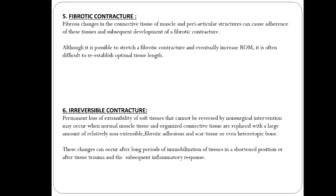Fibrotic contracture occurs when fibrous changes in the connective tissue of muscle and periarticular structures cause adherence of these tissues and subsequent development of fibrotic contracture. It is possible to stretch a fibrotic contracture and eventually increase range of motion, but it is difficult to re-establish optimal tissue length. Irreversible contracture is the permanent loss of extensibility of soft tissue which cannot be reversed by non-surgical intervention. It may occur when normal muscle mass and organized connective tissue are replaced with a large amount of relatively non-extensible fibrotic tissue and scar tissue, or even heterotopic bone, after long periods of immobilization in a shortened position or after tissue trauma and the subsequent inflammatory response.